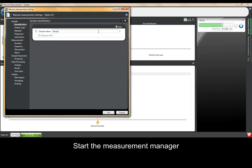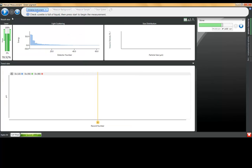And then we can start the measurement process. In the measurement manager, the first thing we will do is add some sample details. In this case we are measuring a green pigment sample.